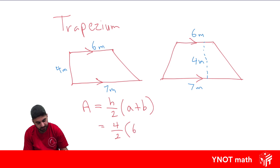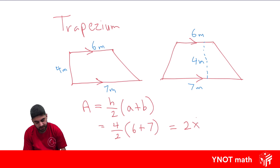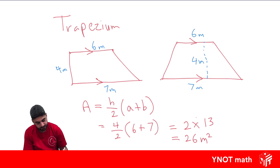One of the parallel sides is 6 and the other is 7. We need to do our brackets first. We can do 4 divided by 2, which is 2, times 6 plus 7 in the bracket, which gives us 13. And 2 times 13 is 26 meters squared.